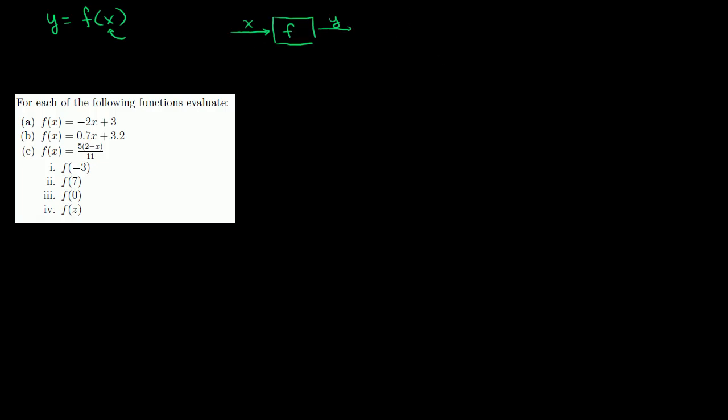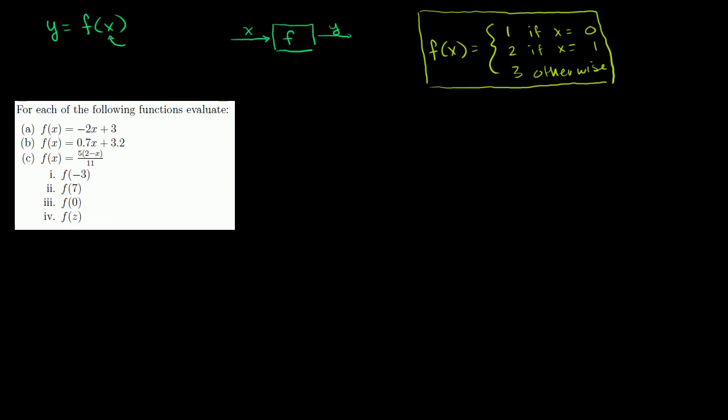Maybe I have a function. Let's say I have a function definition that looks like this. For any x you give me, I'm going to produce 1 if x is equal to 0, I'm going to produce 2 if x is equal to 1, and I'm going to produce 3 otherwise. So now we've defined what's going on inside of the box. This is our box. This is just an arbitrary function definition. But hopefully it'll help you understand what's actually going on with a function.